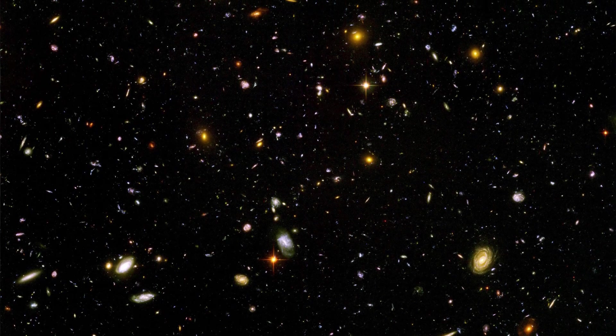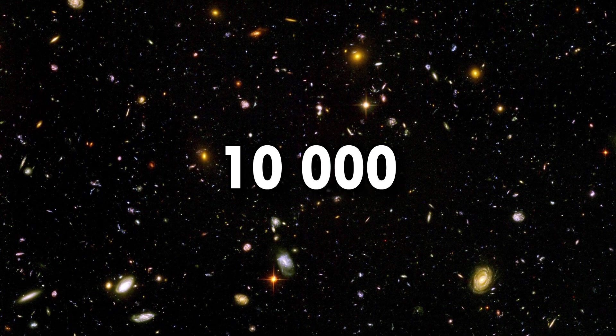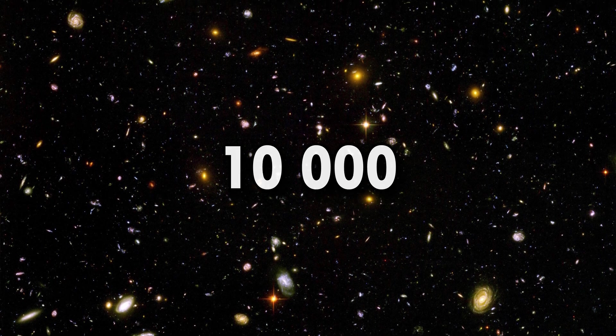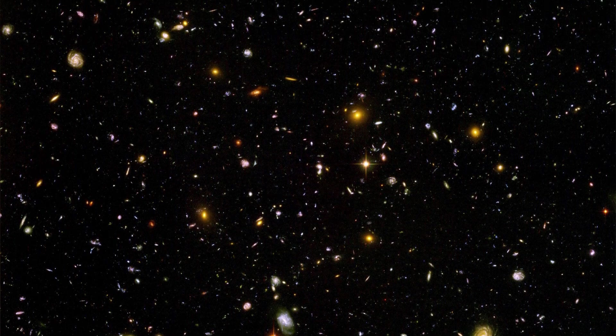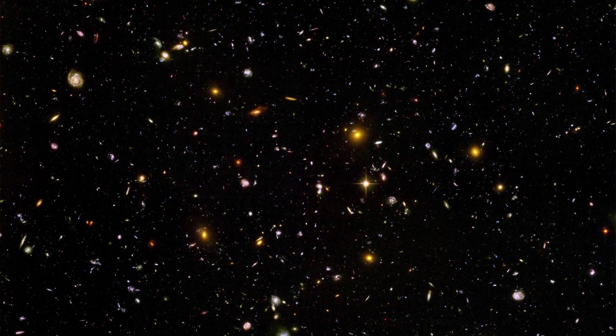He took 800 exposures of one area, pointing his detectors at it for 11 days. The result was this image, a very deep Hubble field of 10,000 galaxies. If Hubble were to photograph the entire celestial sphere in this way, it would have to work continuously for about a million years.